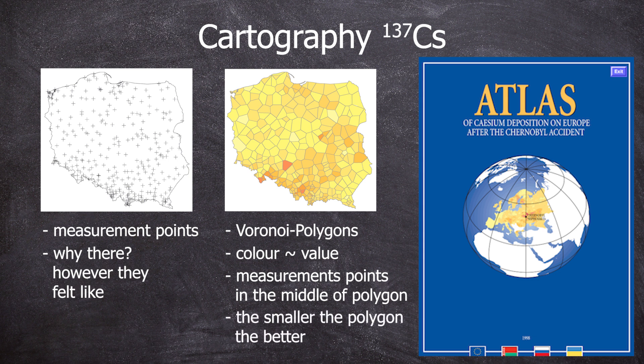The smaller the polygons, the more measurement points are in that area and the more reliable the values for that polygon are — provided that the data for these measurement points were properly collected. Such polygons are not the ultimate solution, but they are quite useful for showing high density of measurement points.